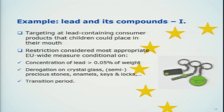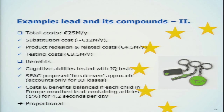Another restriction proposal came from Sweden — a very far-reaching one about lead-containing consumer articles that could be mouthed by children. This restriction was considered the most appropriate risk reduction measure on certain conditions: a concentration limit, a transition period, and certain derogations. The total cost of the restriction was estimated at about 2 million euros per year. The benefits were estimated with regard to avoiding negative effects on cognitive abilities as measured by IQ tests. We used a break-even approach to see at what exposure level the restriction would be justified. This impact assessment was very much based on EFSA's previous opinion on lead, so EFSA experts played a vital role in this process as advisors to the committee. We also found this proposal to be proportional.